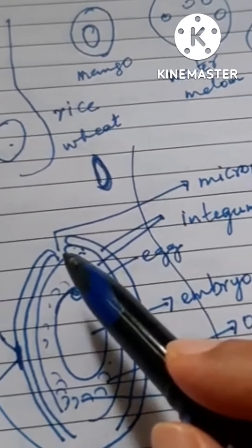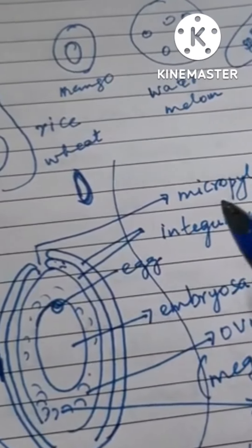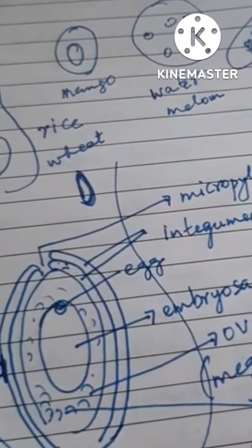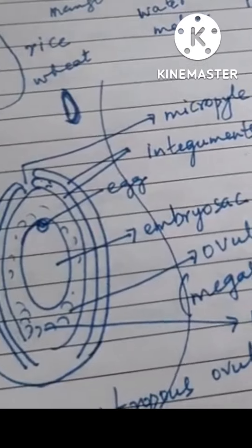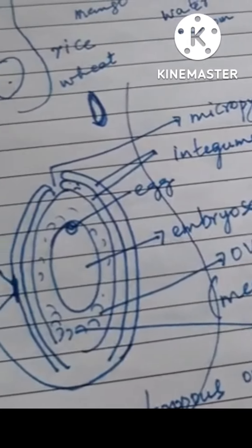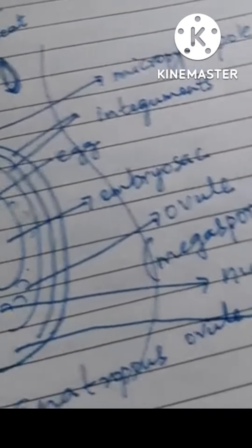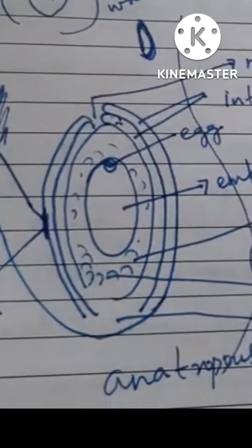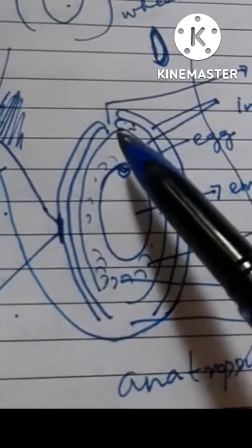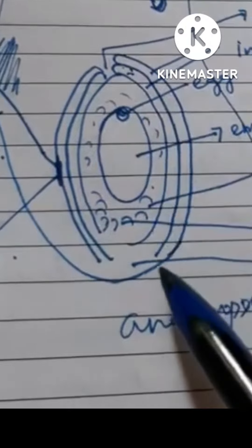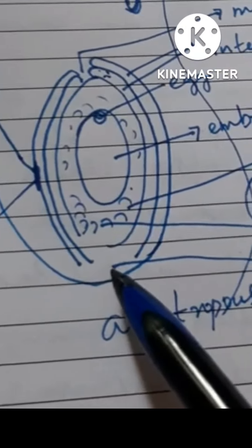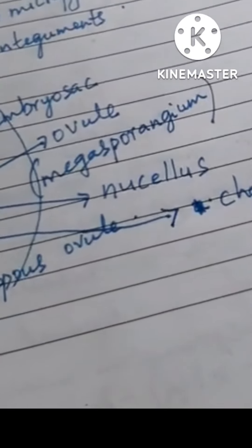The end where the micropyle is located is called the micropyle end or micropyle pole. The opposite side of the micropyle is called the chalazal end, or chalazal pole — just like we say north pole and south pole.